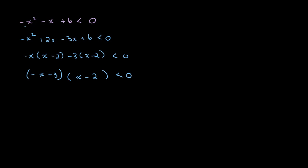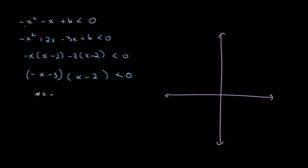Once again, a great way to understand this is by sketching our graph. We have our y-axis and our x-axis. Our two points of intersection give us x equals negative 3 and x equals 2. Since the coefficient of x squared is negative, we will have a maximum point, so our graph will look like a downward-opening parabola, with x equals negative 3 on the left and x equals 2 on the right.